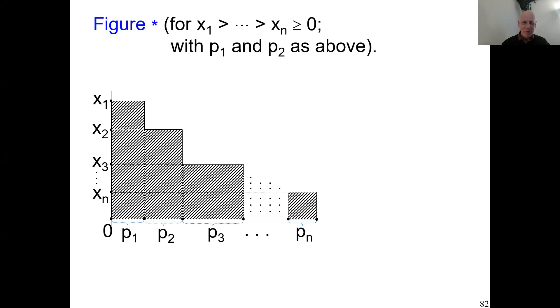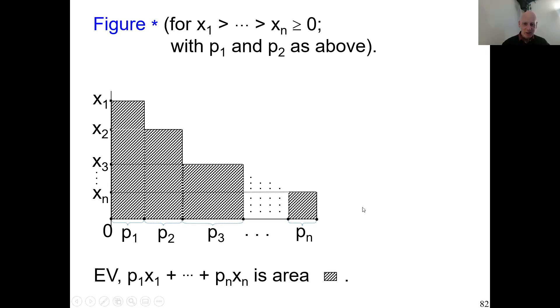Here is a way to depict expected value. The total area is the expected value: first column p1 times x1, plus p2 times x2, plus pn times xn. Indeed, the area is a way to depict the expected value.